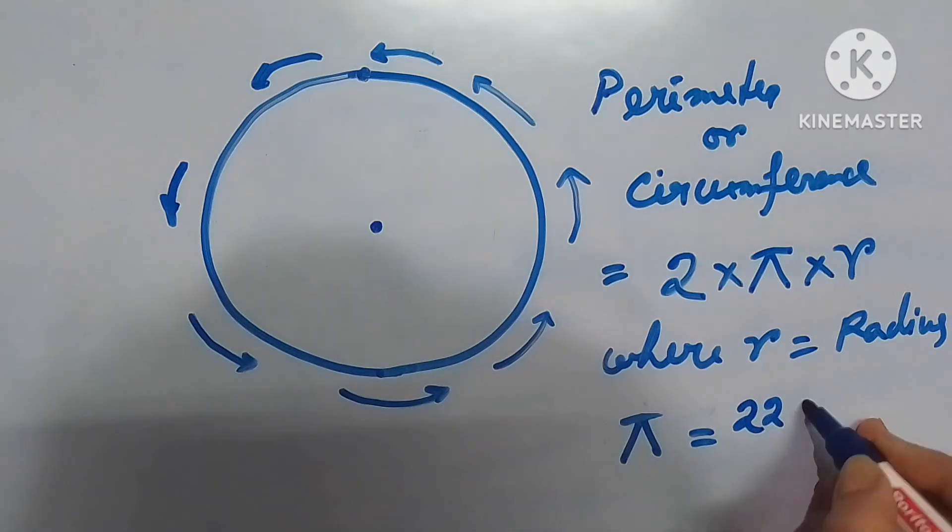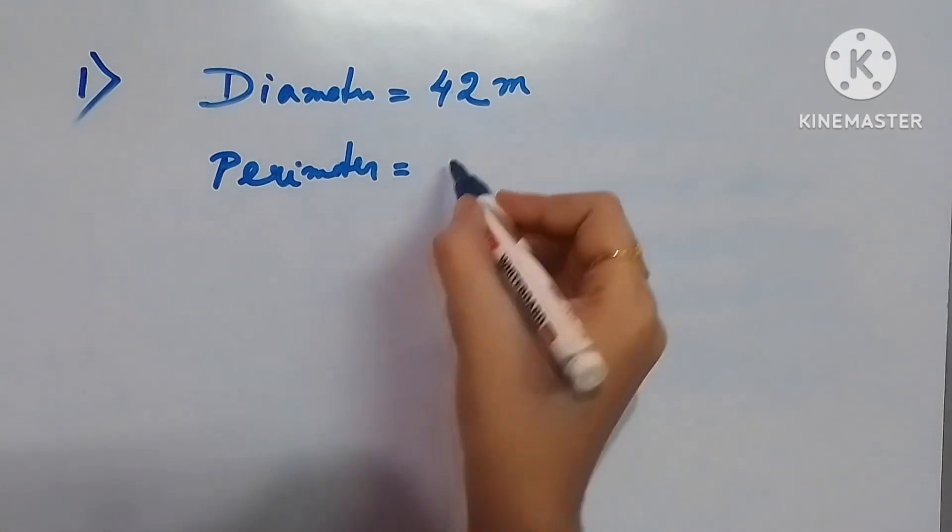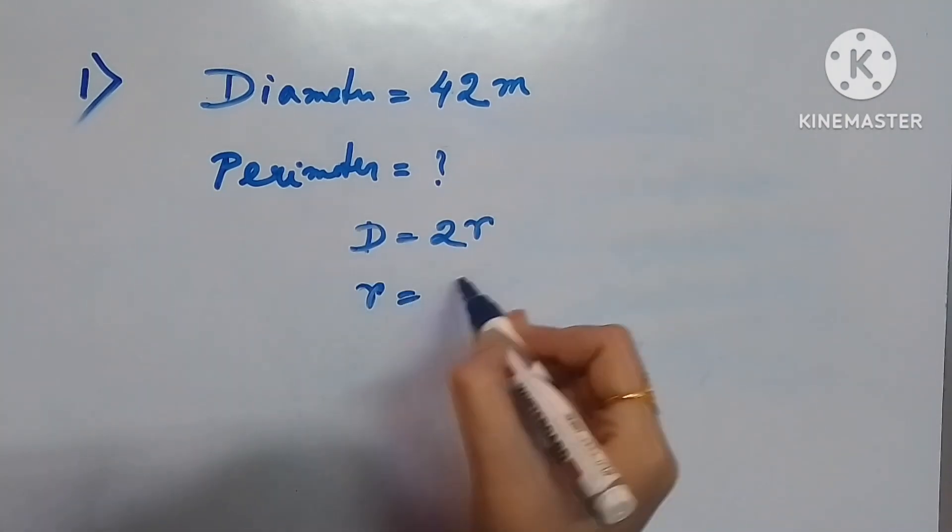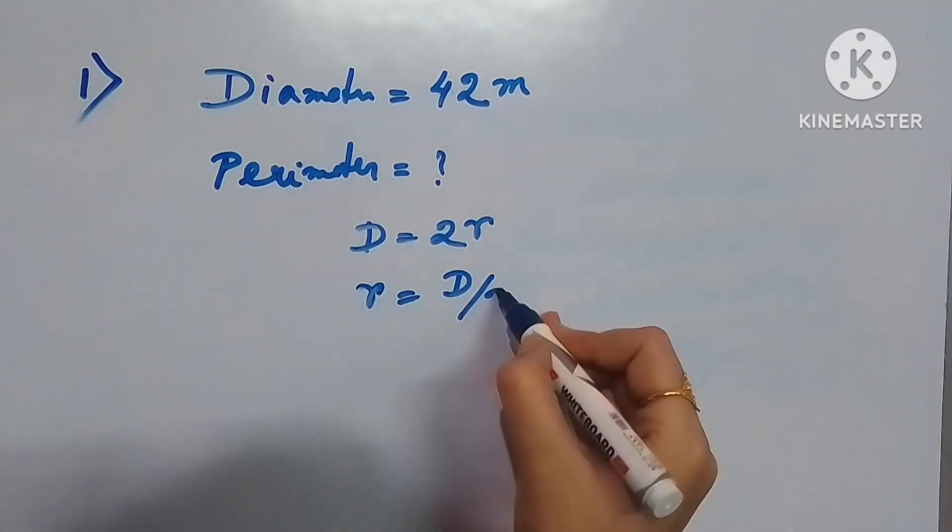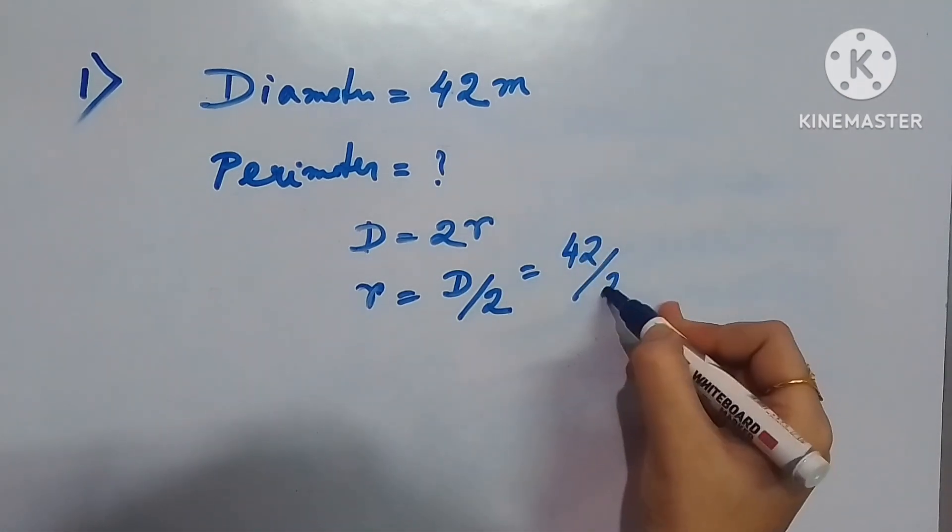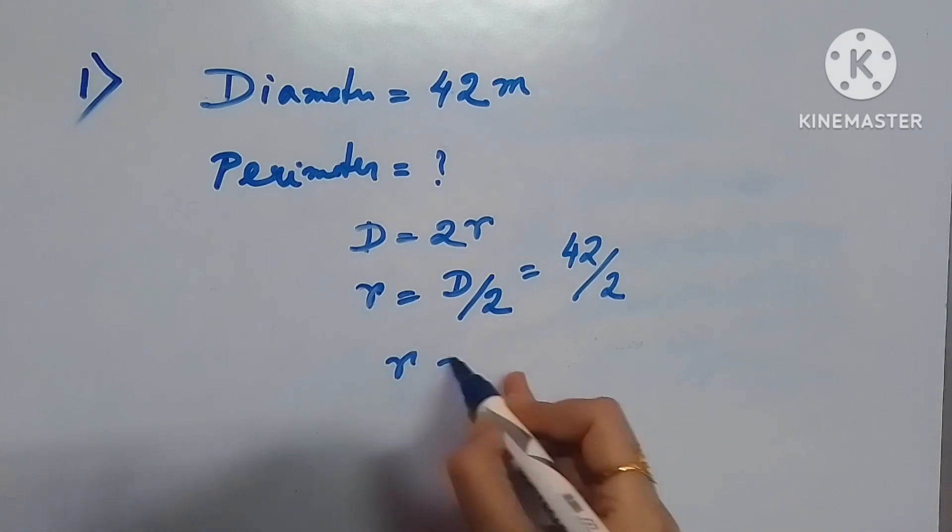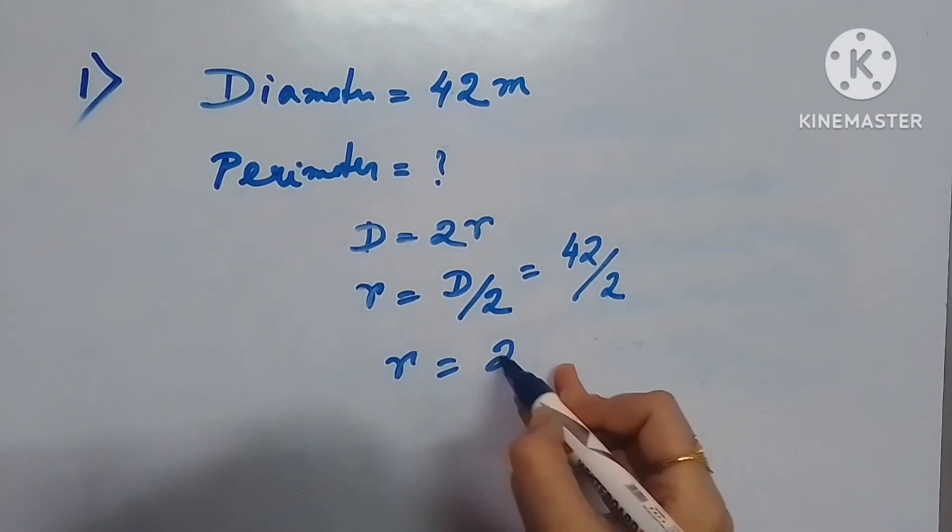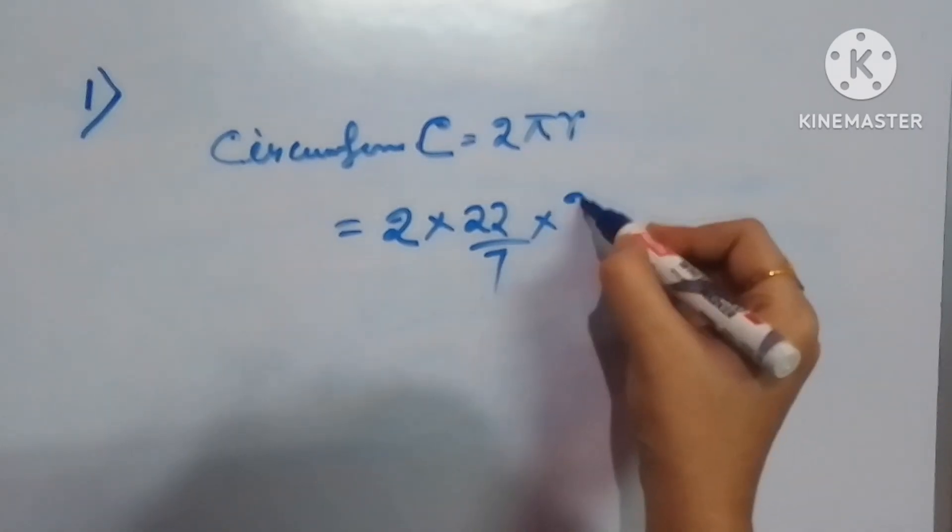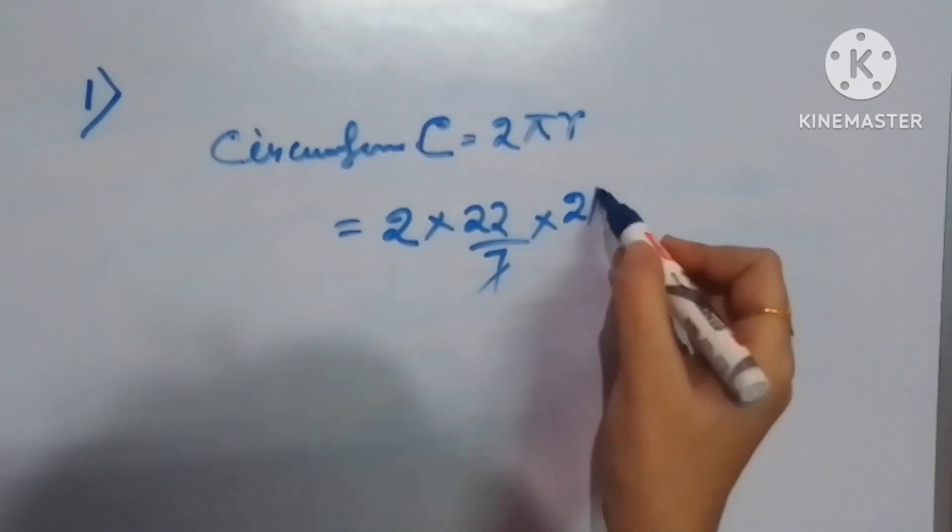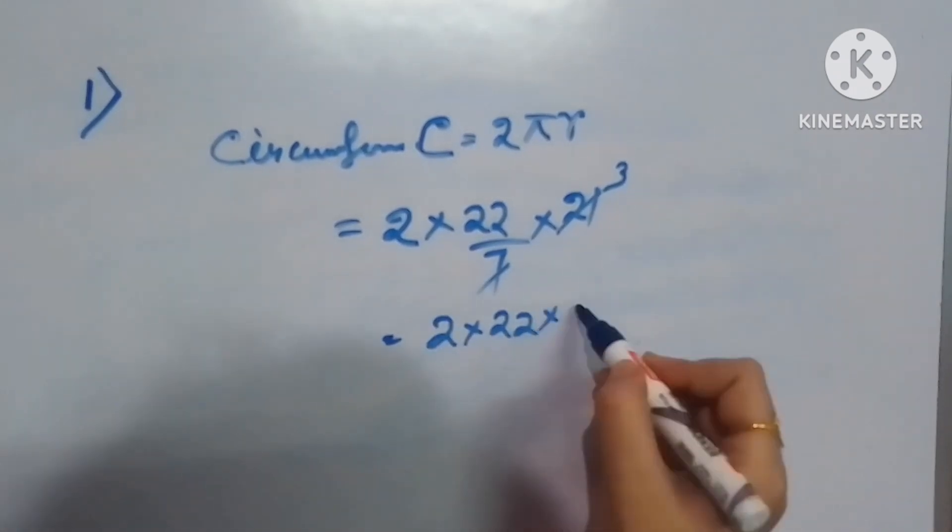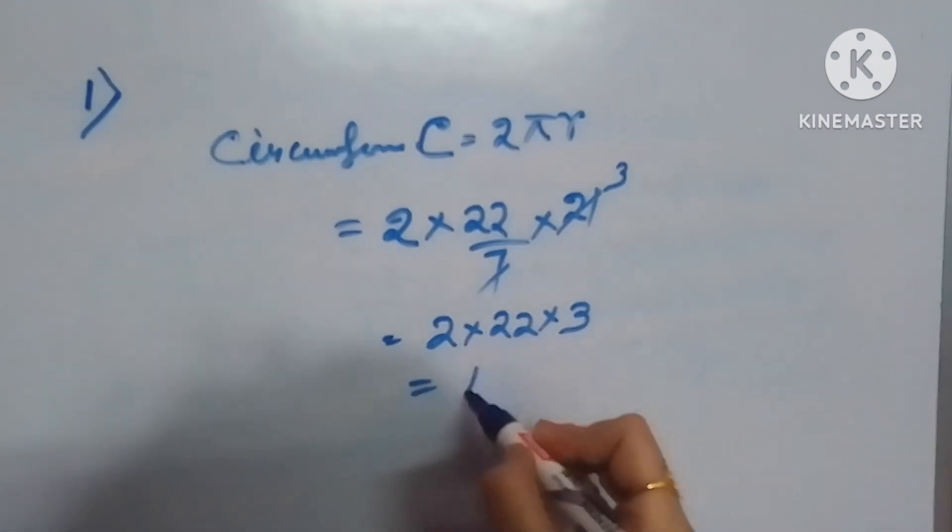Now let's see one numerical problem here. Here diameter of a circle is given, that is 42 meter. We have to calculate the perimeter of the circle. Now what we have to do, we have to first calculate the radius of the circle, that will be half of the diameter, that is 21 meter. Now this value of radius we have to put in the formula of the circumference, that will be 2 pi r and the answer will be like that.